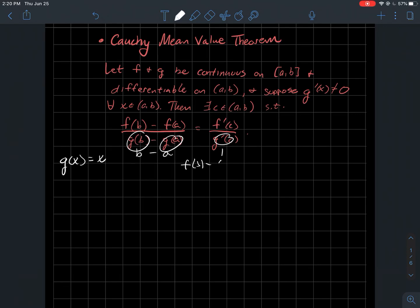I get f of b minus f of a over b minus a equals f prime of c. Soon as I move this to the other side, I get the usual mean value theorem. So Cauchy's mean value theorem is just a little bit more general. It holds for two functions. So the regular mean value theorem is just a specific case of the Cauchy mean value theorem.